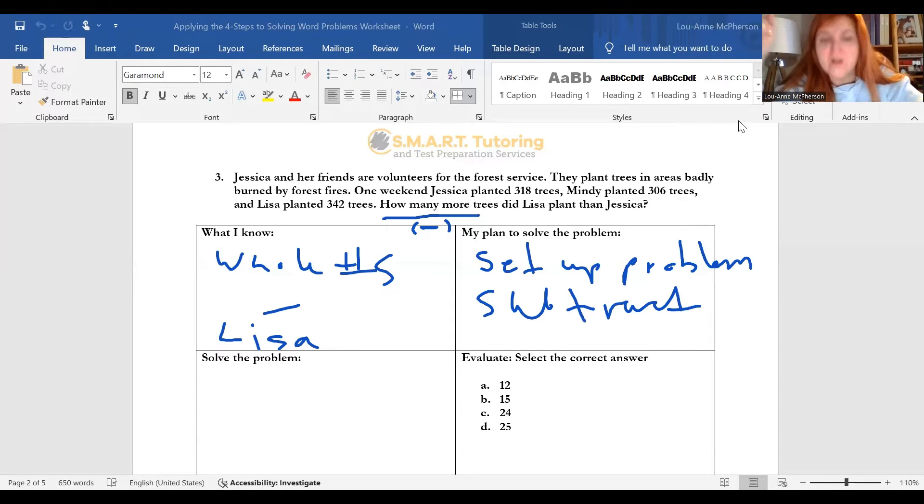Once you know what you need to do, you're going to go ahead into the third stage of the problem, which is to solve the problem. So here is where you're doing your math. Now, Lisa has 342 trees. 342. And how many trees does Jessica have? 318. So notice that I have the larger number on top and that my numbers are right aligned. That's important. Now from here, you're going to do the subtraction. I'm going to show you how to do the subtraction.